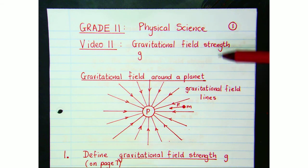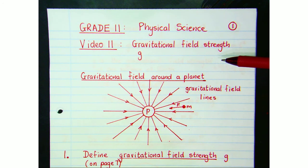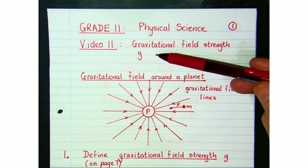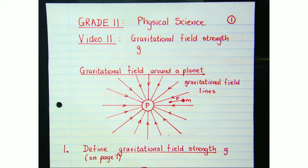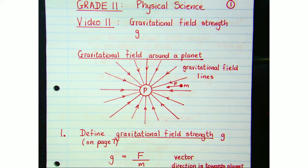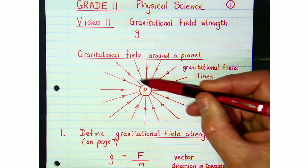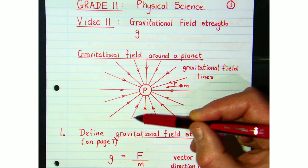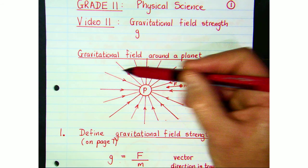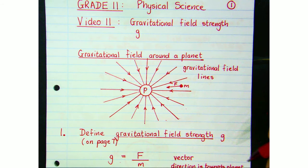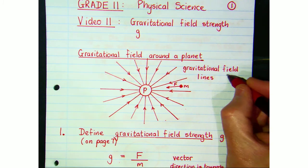This is video 11 on the grade 11 topic on Newton's laws, and this is the second part of Newton's laws on gravitation. We're talking about the gravitational field strength in this video. What I've drawn here is our planet P and around it I've drawn gravitational field lines — they have direction and they get further apart as we get further away from the planet.